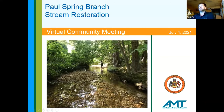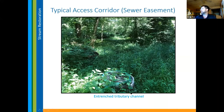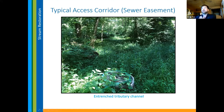Here is a section of the channel. We mentioned the reference reach and the 15-foot-wide, foot-and-a-half-deep target dimension — you can see that's kind of what has happened in some areas here, and there are portions that are already in good condition that we're not planning to touch. The sewer easement corridor runs through most of the project and this is what we'll be using for construction access — it's already clear of trees, or needs to be for utility access.